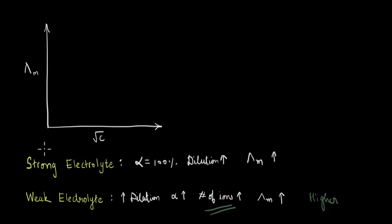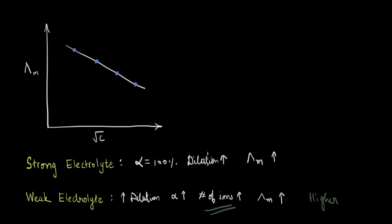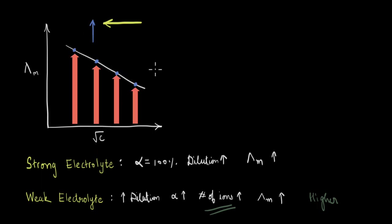For a strong electrolyte, if we calculate the molar conductivity at different values of concentration and plot this on the graph, we see a trend that looks like a straight line — these blue dots are data points for a chosen set of concentrations. We know that for a strong electrolyte, when we increase the dilution the molar conductivity increases. As we go from right to left on the graph, the concentration is decreasing and the dilution is increasing. Accordingly, we can see that the molar conductivity values along the y-axis increase.